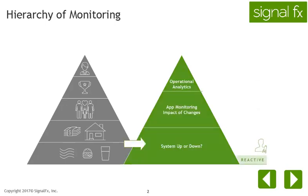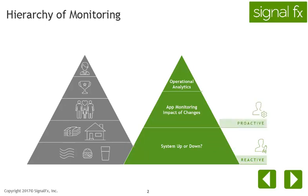The lowest tier represents the very basic need to know if the system is up or down. In this phase, you detect and fix problems after your customers find out. Once you are comfortable at this phase, you can think about being proactive. In this stage, you watch key metrics and understand the scalability and performance characteristics of your applications.